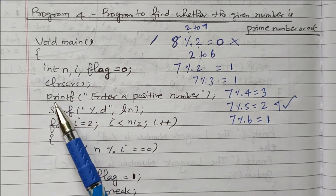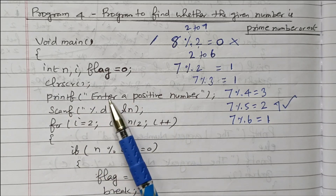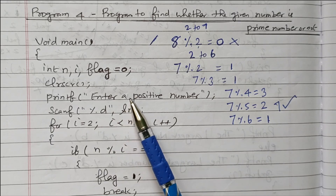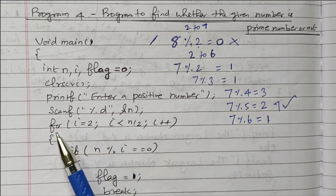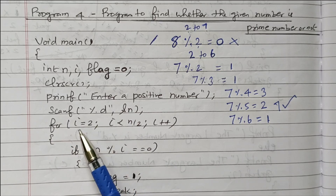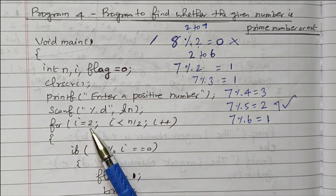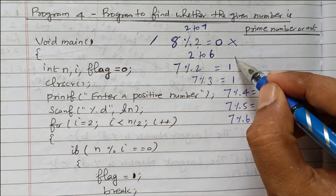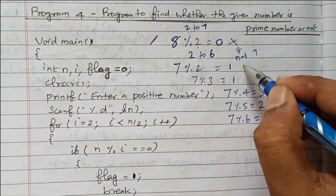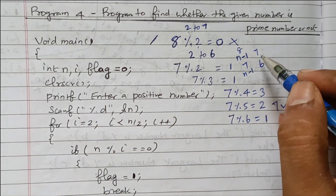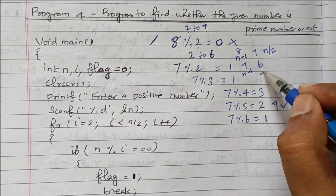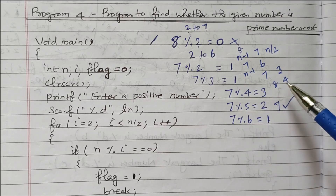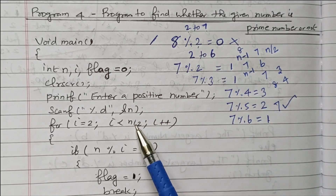After clrscr, we ask the user to enter a positive number. The input is scanned by the scanf function using %d and &n — the address of n — to store the entered number. Then we start the for loop: i starts at 2 (we cannot start with 1). The condition is i less than or equal to n divided by 2 — half the number is sufficient, no need to go up to n minus 1.